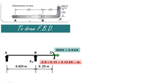The given beam is simply supported at A and B and it has a force of 800 N acting as shown in the figure. We will use the equivalent load and moment system at point C, converting this 800 N force into a load and moment acting at point C. This 800 N force will be drawn in the same direction.